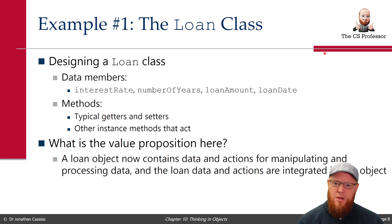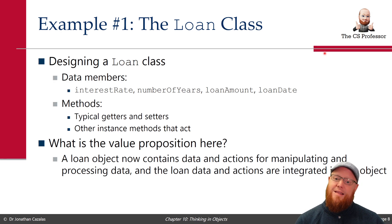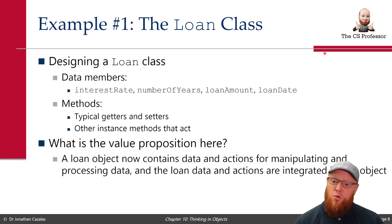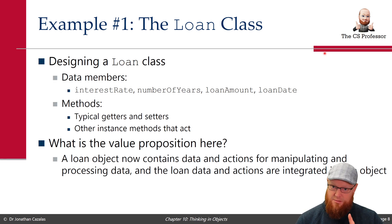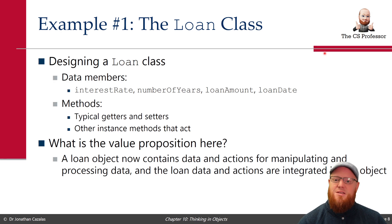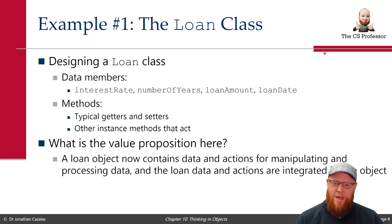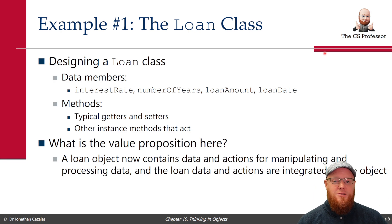Let's design this loan class. We're going to have data members: an interest rate, number of years, loan amount, and loan date. We'll see that we can create a date object — something built in by Java from the java.util library. We're going to have the typical getters and setters as methods, but in addition we'll have other instance methods that belong to the object and will work on the specific data of that object. The value proposition is that a loan object now contains both the data and the actions for manipulating and processing that data — coupled together as opposed to being separate.